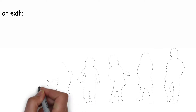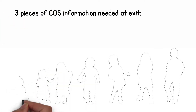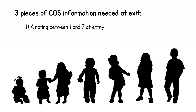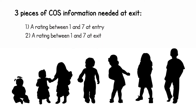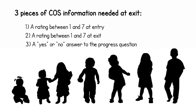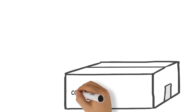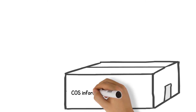Children exiting should have three pieces of child outcome summary information: a rating between 1 and 7 at entry, a rating between 1 and 7 at exit, and also at exit, a yes or no answer to the question about whether the child has gained any new skills or behaviors. The state agency collects this information from all programs around the state.